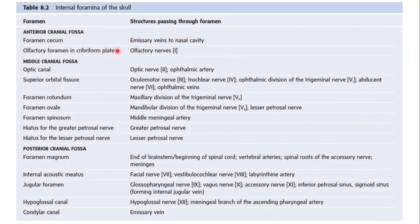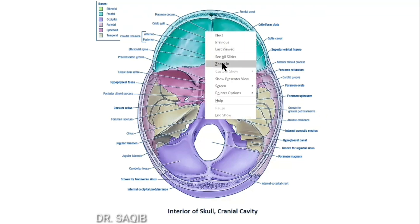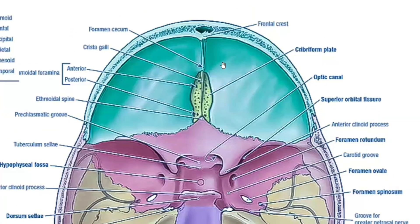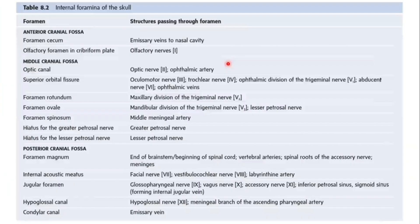The olfactory foramen passes the olfactory nerve. You can see this — this is the foramen cecum. Let me zoom in; this is a very important topic. You can see the foramen cecum and the cribriform plate. Follow the cursor — this is the foramen cecum in the anterior cranial fossa.